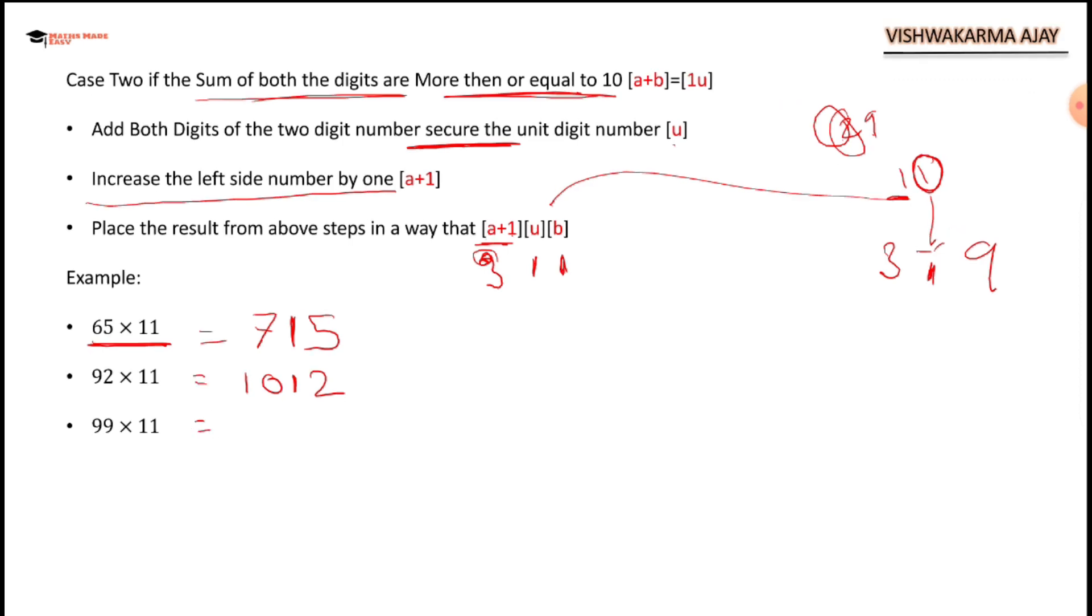Now 99 times 11. Again, 9 plus 1, I have to do 10 here. 9 plus 9 is 18, but I am going to secure only the unit place, that is 8, and 9. 1, 0, 8, 9. I am done here.